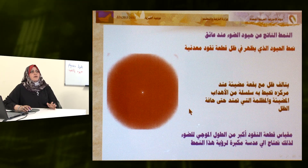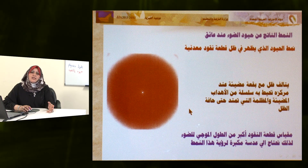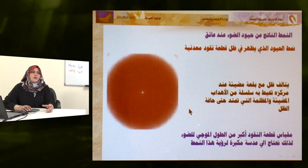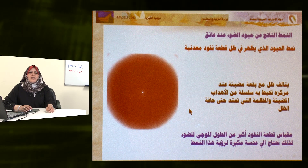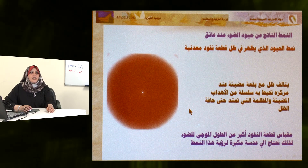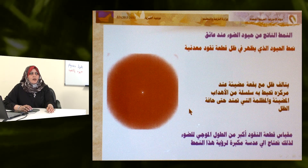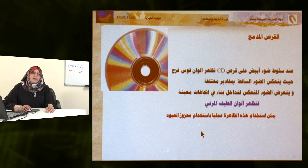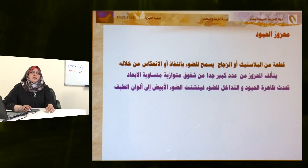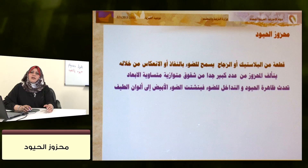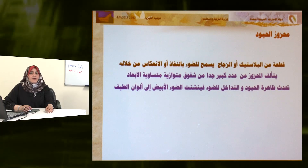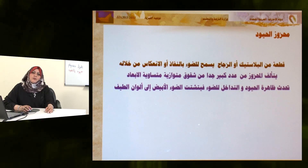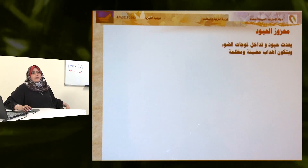القرص المدمج مثال عملي: عند سقوط الضوء عليه تظهر ألوان الطيف كقوس قزح، حيث ينعكس الضوء بمقادير مختلفة ويتعرض للتداخل البناء في اتجاهات معينة. يمكن استخدام هذه الظاهرة عملياً بمحزوز الحيود، الذي يتكون من قطعة بلاستيك أو زجاج بها عدد كبير من الشقوق بمسافات متساوية، فتتحقق ظاهرتا الحيود والتداخل وتشتيت الضوء الأبيض إلى ألوان الطيف.